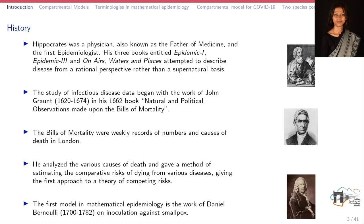Later, detailed data study on disease was done by John Grant from 1620 to 1674. In his book Natural and Particular Observations Made Upon the Bills of Mortality, he compiled a very large amount of data. This book has weekly records of numbers and causes of death in London. He analyzed various factors causing death and gave a method of estimating the comparative risk of dying from various diseases. The first mathematical model for epidemiology was given by Daniel Bernoulli, and this first mathematical model he proposed was of smallpox.